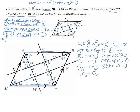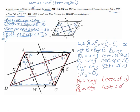We also need to prove that N2 equals P2. Highlighting this triangle, we can see that N2 is also equal to x plus y because of the exterior angle of a triangle. And looking at the triangle for P2, P2 is also equal to x plus y, again because of the exterior angle of a triangle. Therefore, N2 is also equal to P2.